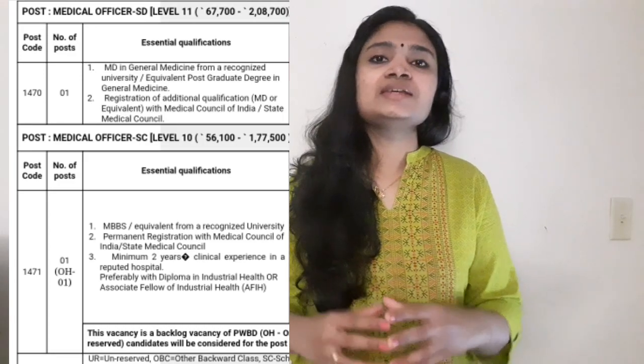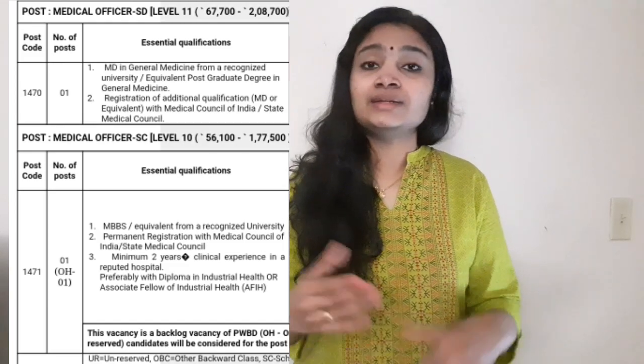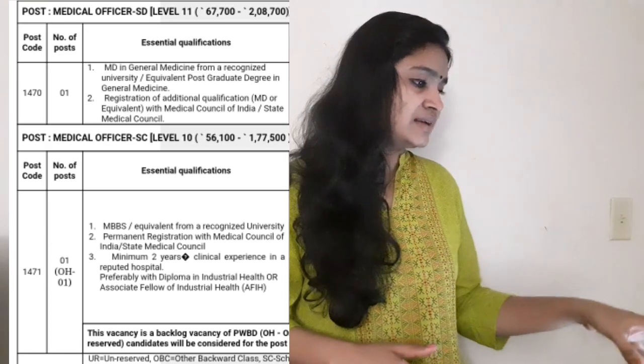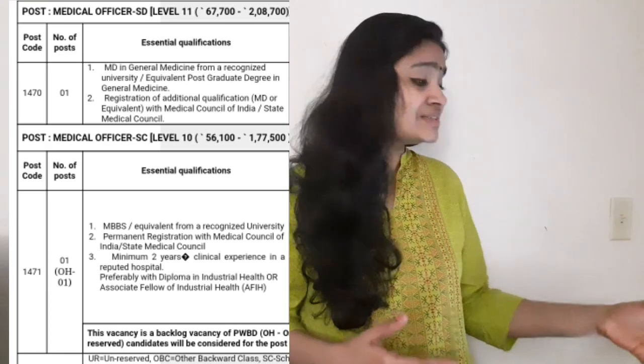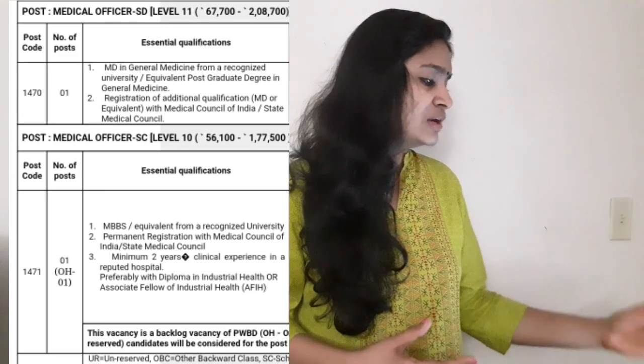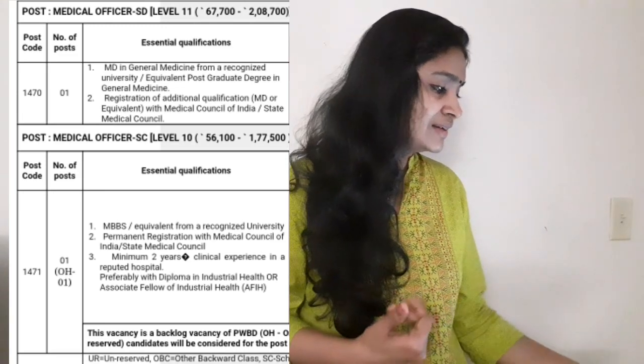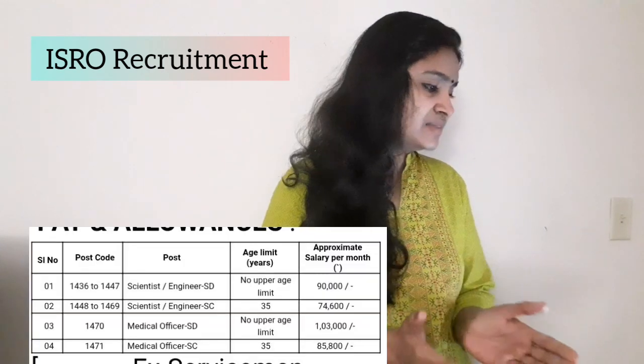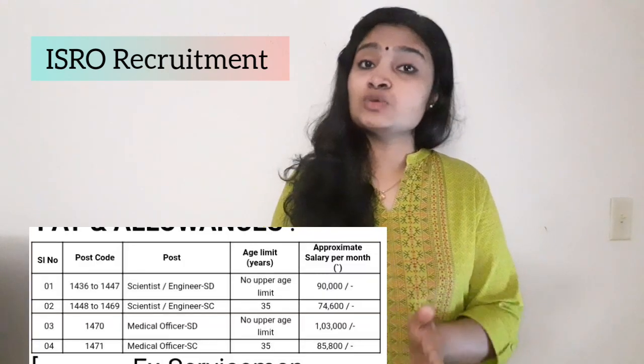These are the various categories for recruitment and the branches they are recruiting. I'll be sharing the link in the description. On the site you can see the detailed qualification requirements, the number of posts, the nature of the job — everything is mentioned there. Now let us see the salaries being offered. For Scientist Engineer SD the salary is ₹90,000 per month.